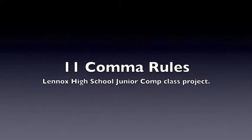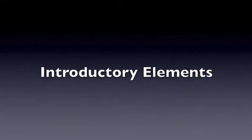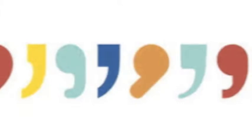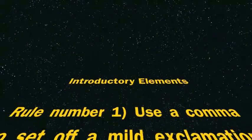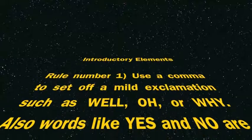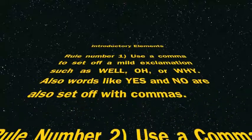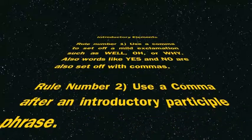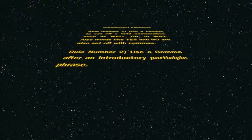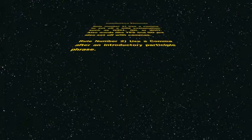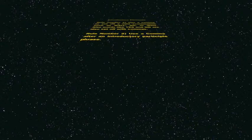11 Comma Rules: Introductory Elements. Welcome. Rule Number 1: Use a comma to set off a mild exclamation such as well, oh, or why. Words like yes and no are also set off by commas. Rule Number 2: Use a comma after an introductory participle phrase. These phrases will begin or end with a past or present tense word. A quick example of these is 'I am walking' and 'I walked.'